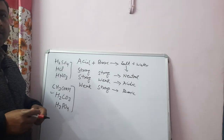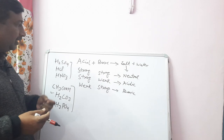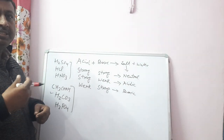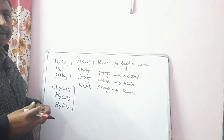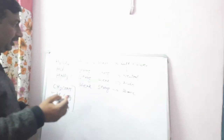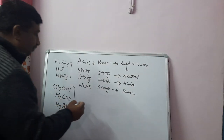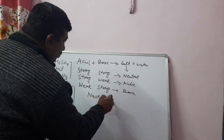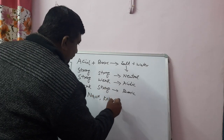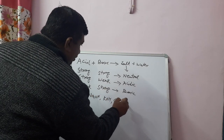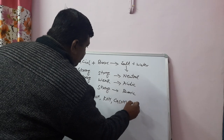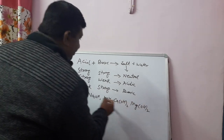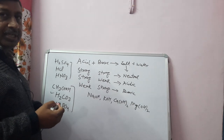Weak acids are not completely ionized in water, whereas strong acids are 100% ionized in water and give hydrogen ions. The strong bases are NaOH (sodium hydroxide), KOH (potassium hydroxide), calcium hydroxide, and magnesium hydroxide. These are alkali materials — sodium, potassium, calcium, magnesium — that is why they form strong bases.